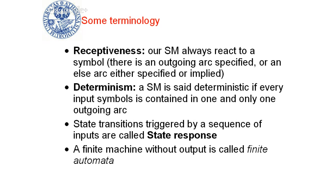The state transitions — if you get a sequence of inputs and keep track of the states that your state machine is in at each point in time — give you what is called the state response. There are finite state machines that don't have any outputs; those are called finite automata. Some of you know what they are used for — you've used them many times.